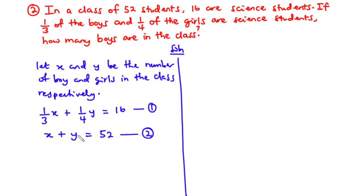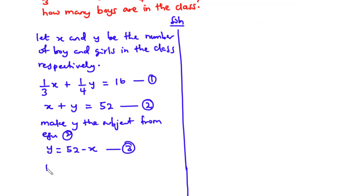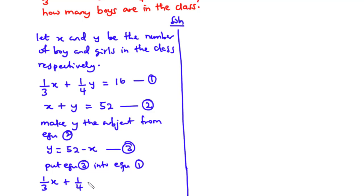We are going to solve these two equations simultaneously by making one variable the subject and substituting it into the other equation. From equation two, making y the subject: y equals 52 minus x — let's call this equation three. Now putting equation three into equation one: (1/3)x plus (1/4)(52 minus x) equals 16.